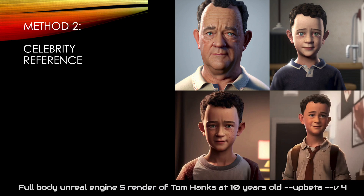Here's method 2. This is more controversial since in this technique we're using famous personalities to gain a consistent looking character. Midjourney has access to lots of images of celebrities so it has a good understanding of these characters in many different settings and expressions. I decided to use the celebrity Tom Hanks but morph this character to a much younger version of just ten years old, so you end up with a character fairly removed from the original.